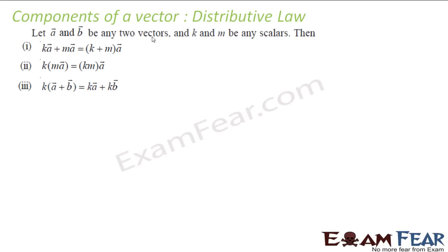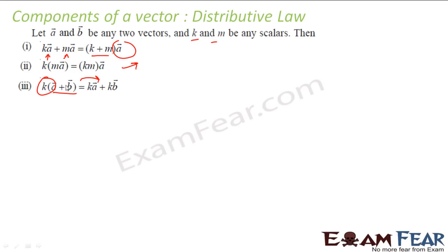If k and m are scalars, then k·a + m·a = (k + m)·a — the distributive law. Similarly, k·(m·a) = (k·m)·a. Also, k·(a + b) = k·a + k·b. These are all the normal distributive laws, which can be derived using the existing formulas you have learned.